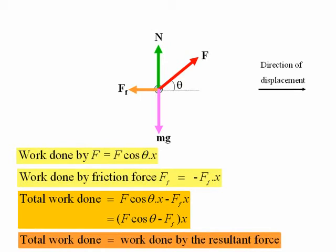So if you want to determine the total work done by all forces acting on a body, you can either work out all the individual works done by each of the forces in turn and then add them up algebraically, or you can work out the resultant force and then just multiply the displacement by the component of the resultant force in the direction of the displacement.